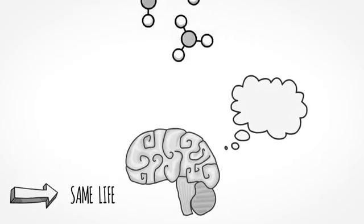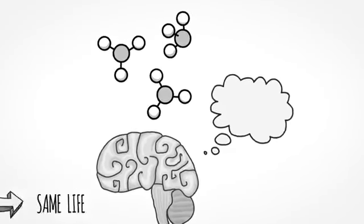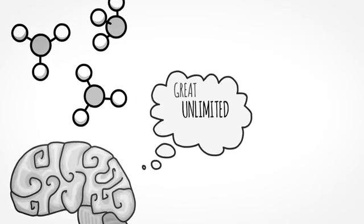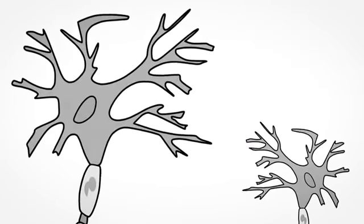So now, every time you have a thought, you make a chemical. And if you have a great thought or an unlimited thought or a joyful thought, you turn on a set of circuits in your brain that fires in a very specific sequence,